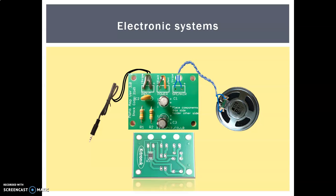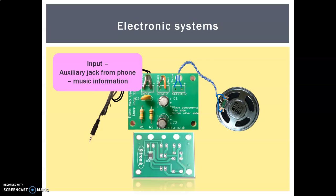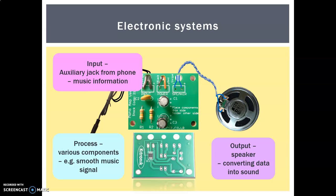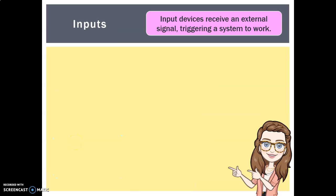Bringing that idea back to our speaker device: the input is the auxiliary jack from the phone — more specifically, it's the music information, the data coming in from the phone. The process involves our resistors, capacitors, and the little chip working together to smooth out and amplify the signal. The output is our speaker, converting that data back into sound that we can hear.